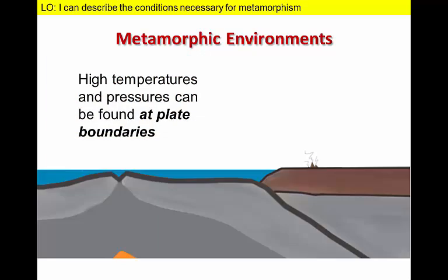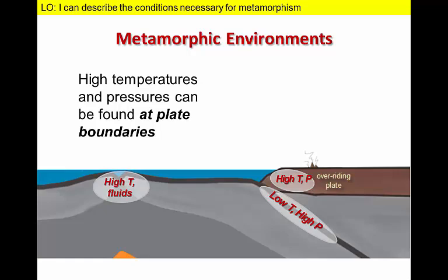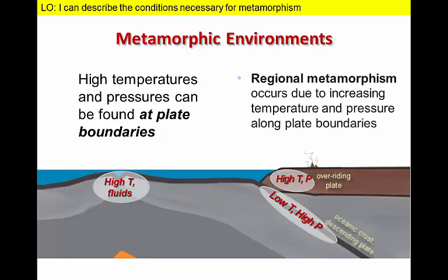Convergent and divergent plate boundaries represent environments with a range of temperature and pressure conditions suitable for different degrees of metamorphism. High temperature and high pressure metamorphism occurs in the overriding plate at convergent boundaries. In contrast, the oceanic crust of the descending plate experiences relatively low temperature and high pressure conditions. Finally, the oceanic ridge is characterized by high temperatures and circulating hot fluids. This type of metamorphism associated with plate boundaries is known as regional metamorphism.